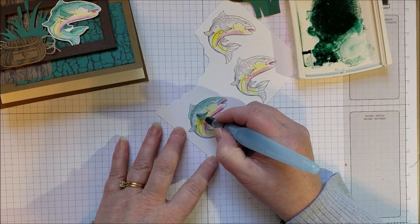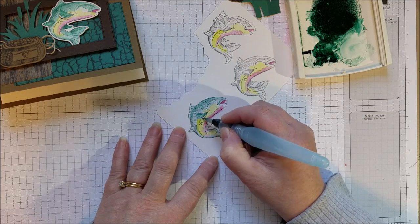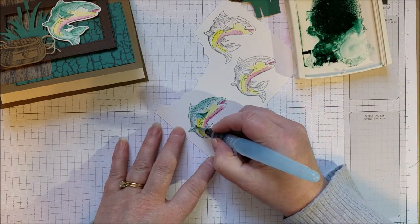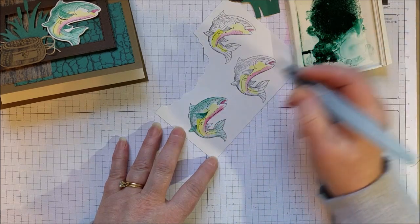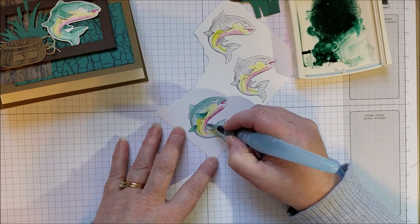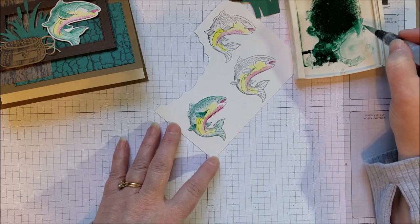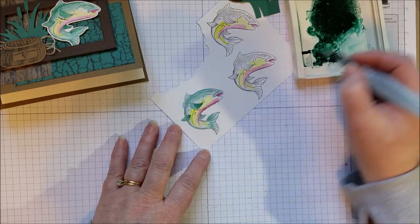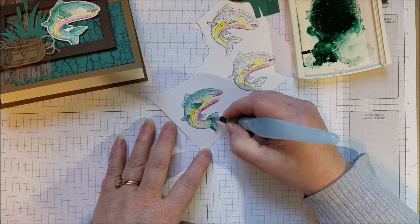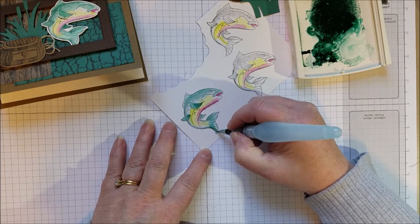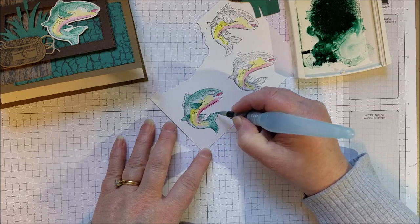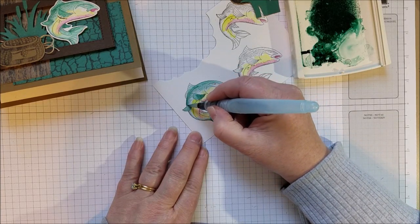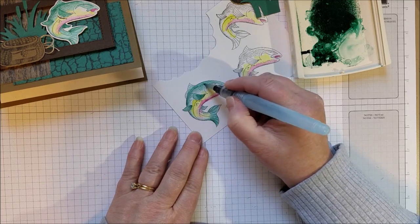And maybe define this fin a little bit. And you can let this stamp kind of tell you where you want to add those dark parts, like you can see where the shadows are on the image, at least on this particular image.